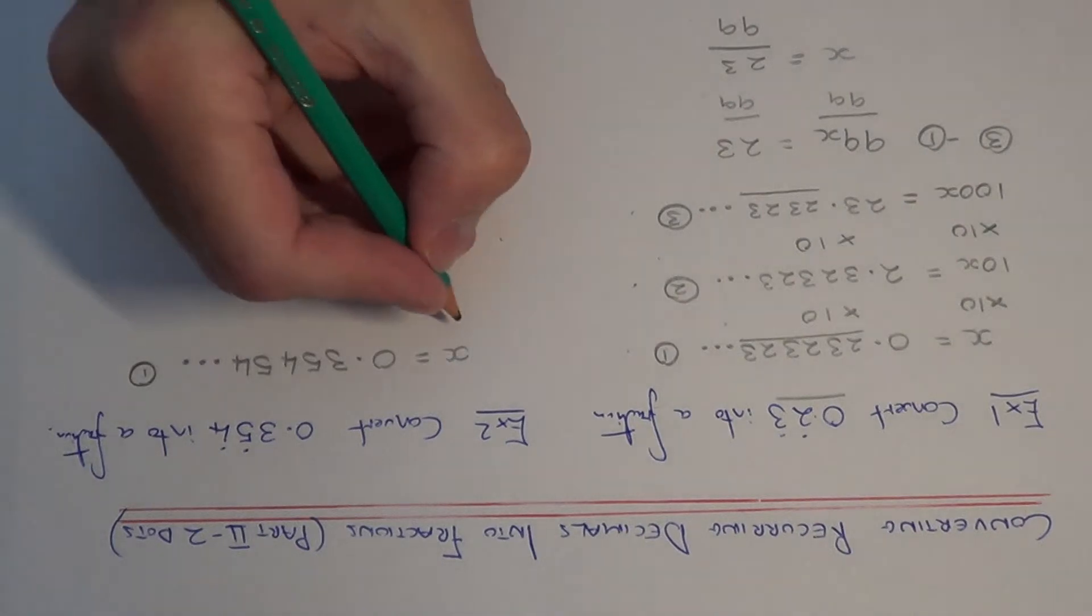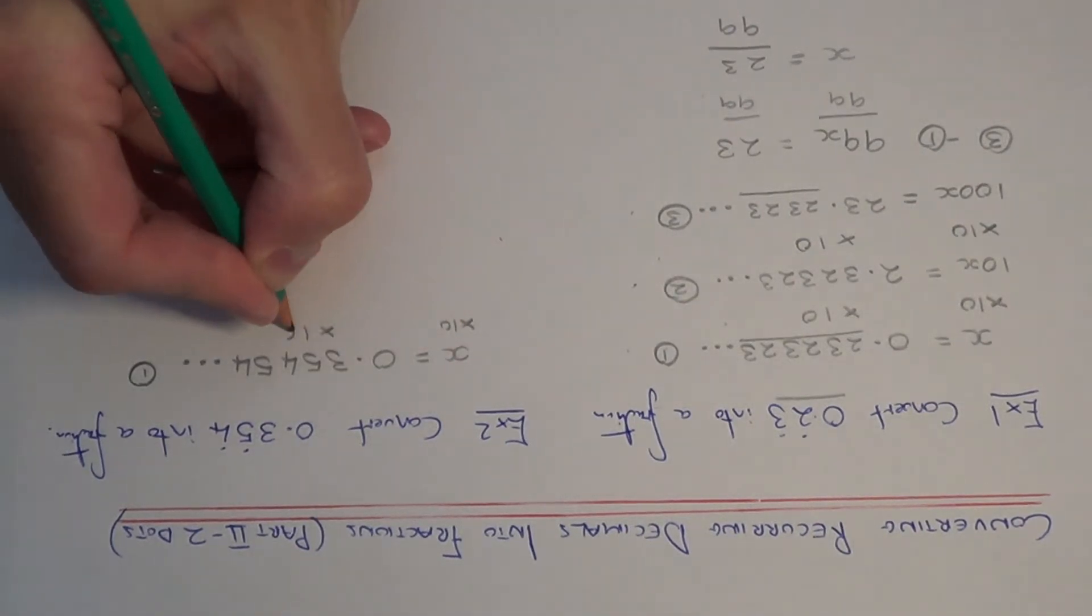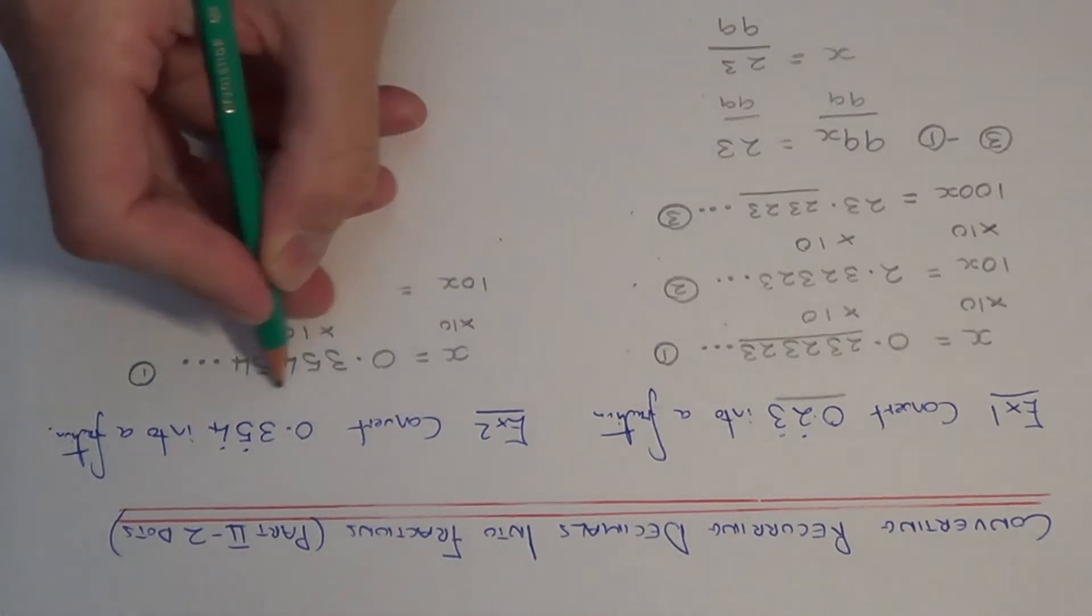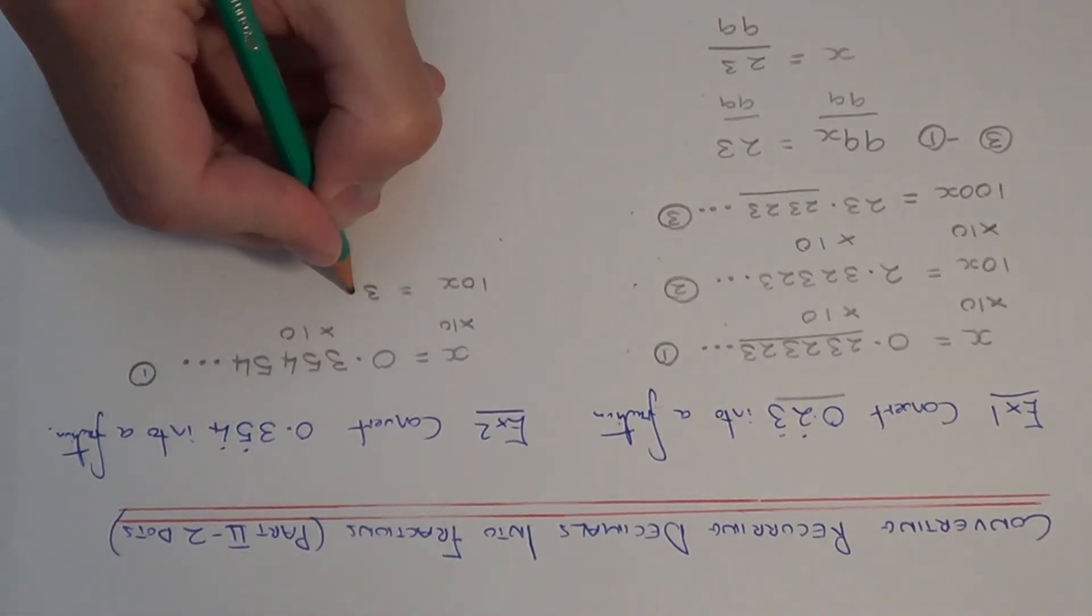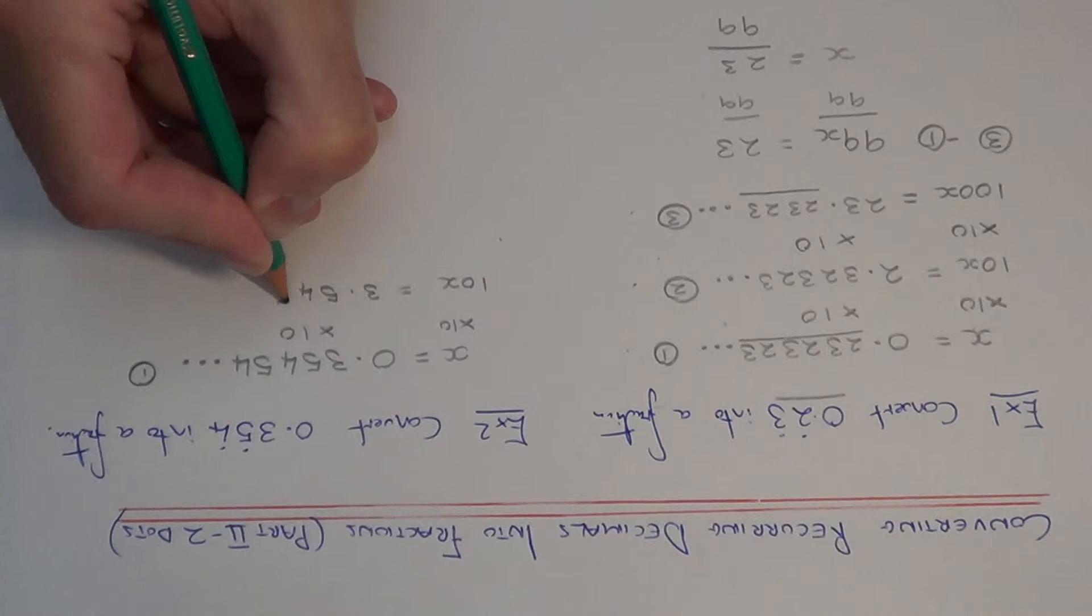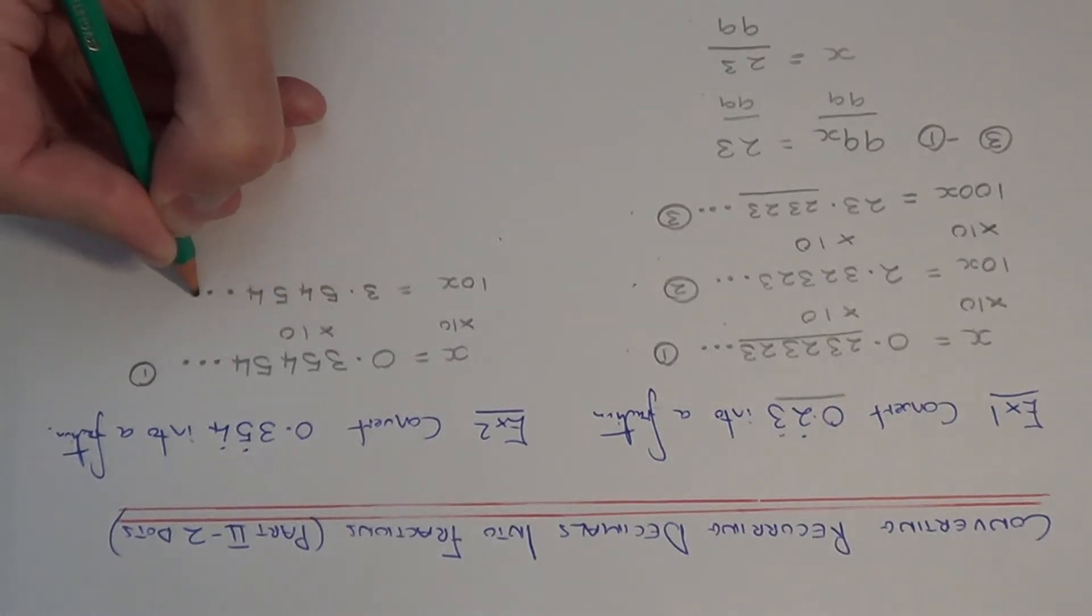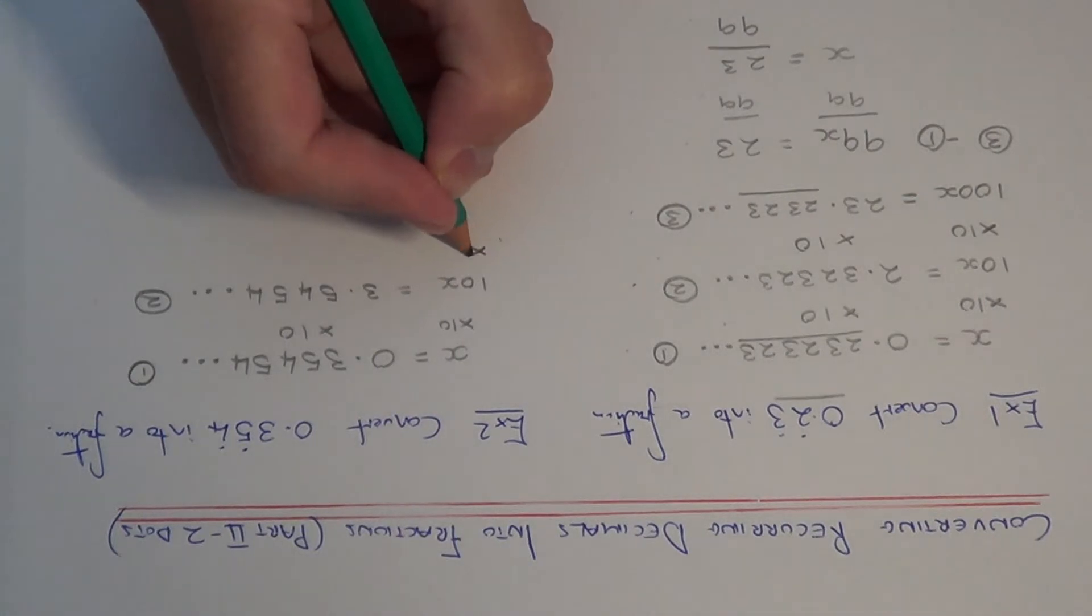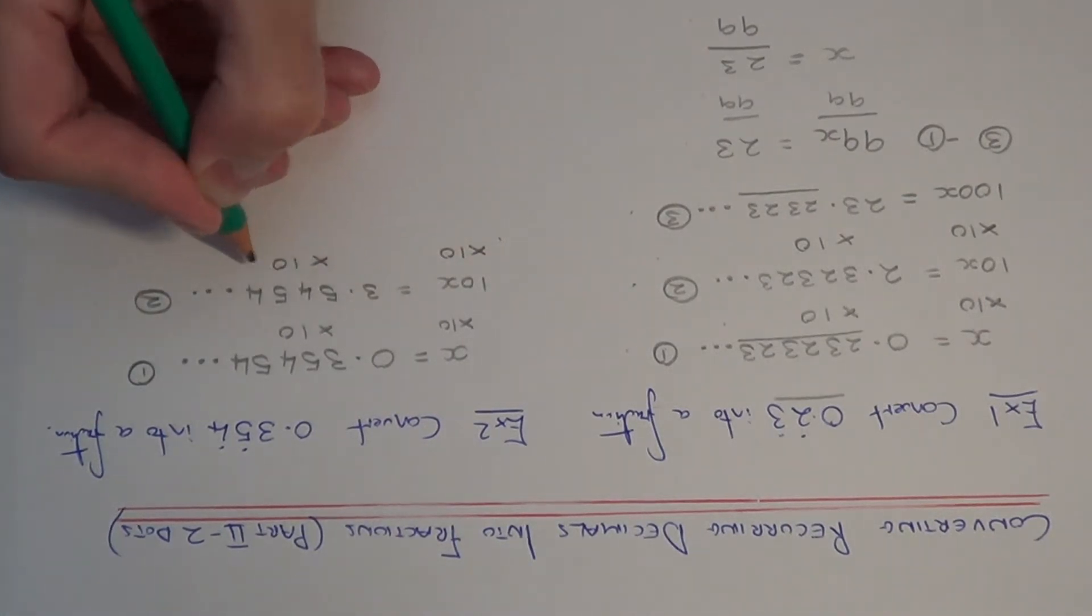So let's multiply both sides of the equation by 10. So x times 10 is 10x. And if I multiply this by 10 I get 3.5454 etc. So I can't take these two equations away as the numbers after the decimal point don't match. So I am now going to multiply by 10 again.